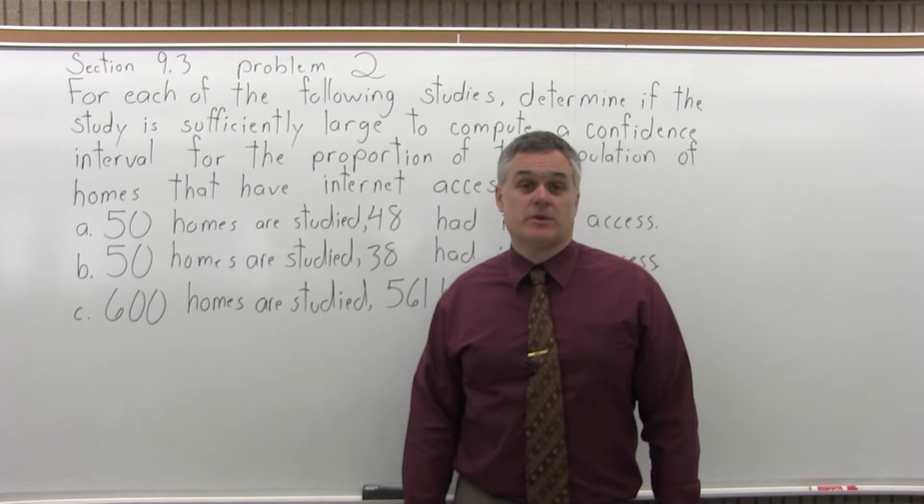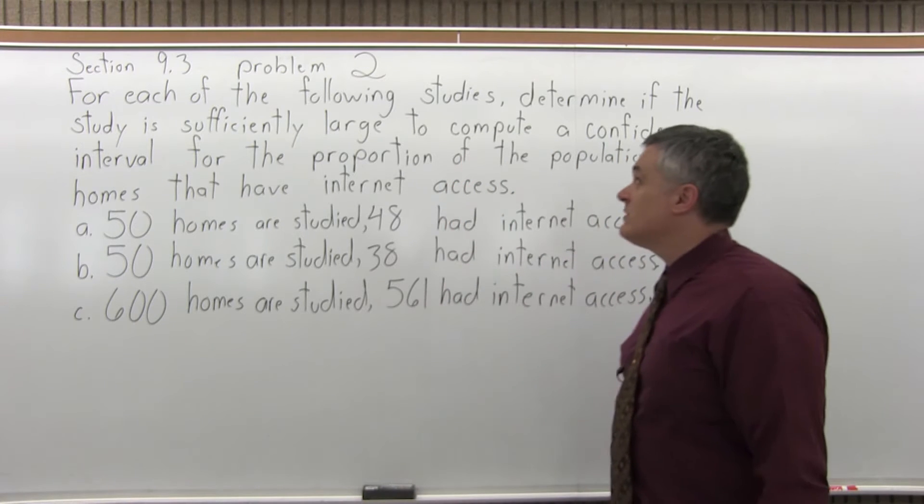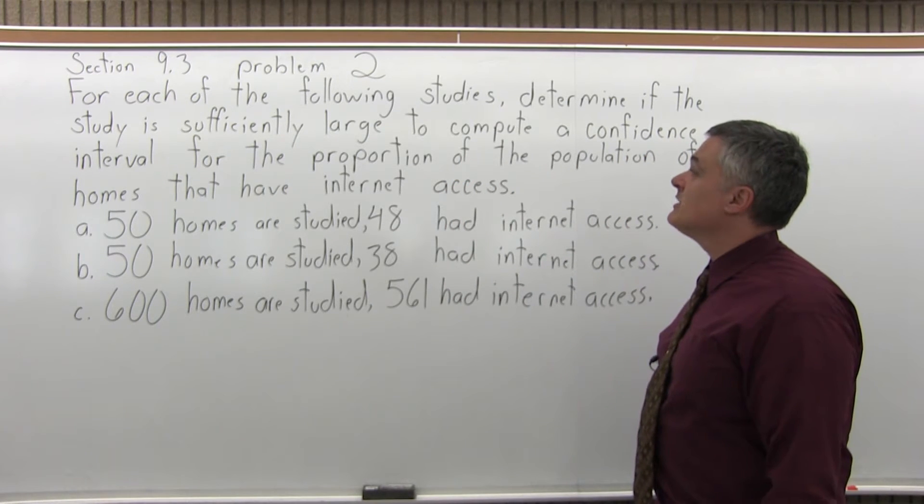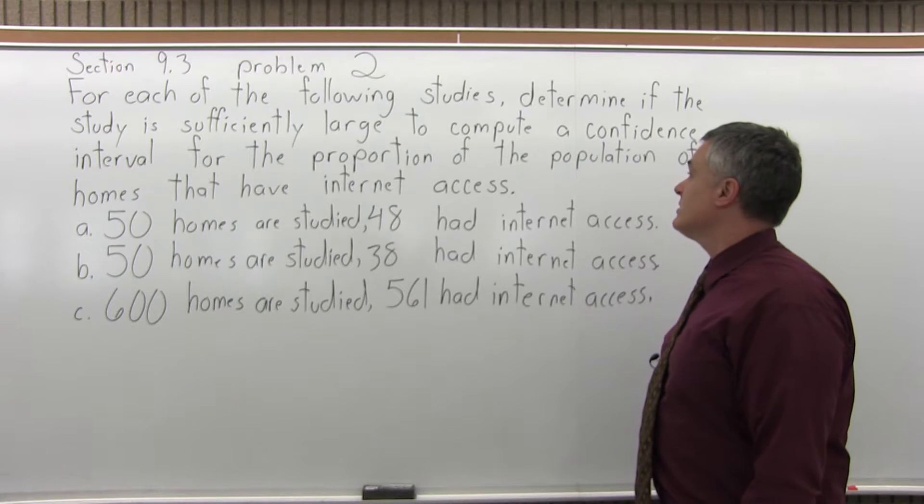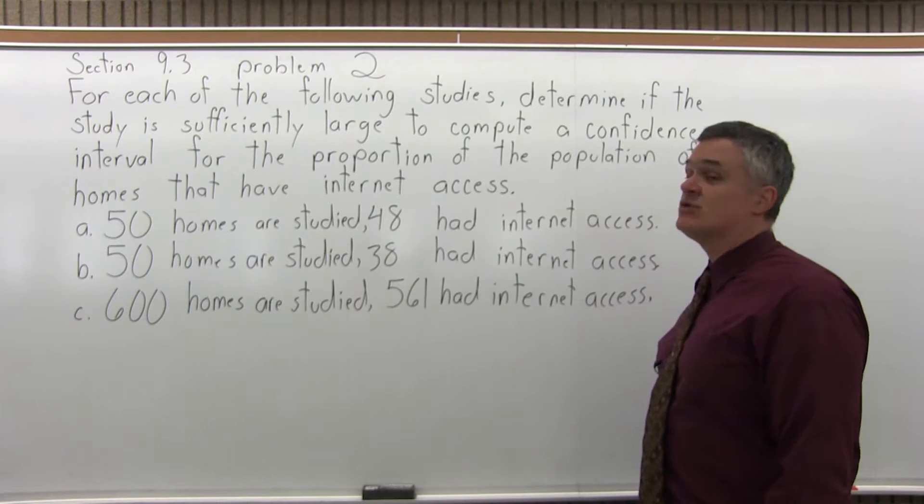This is Section 9.3, Problem 2. It says, for each of the following studies, determine if the study is sufficiently large to compute a confidence interval for the proportion of the population of homes that have internet access.